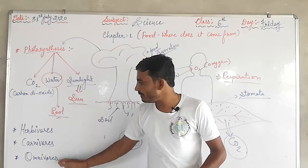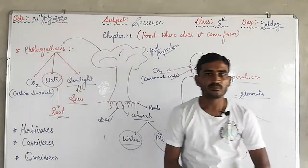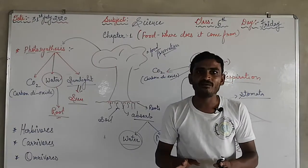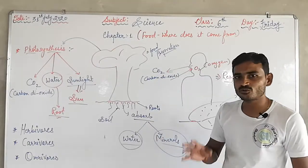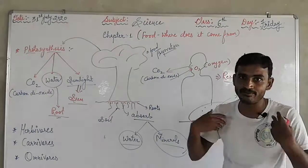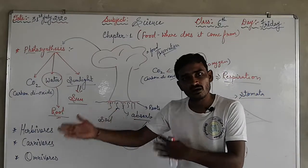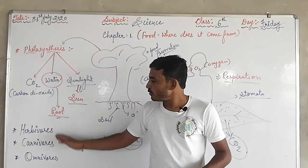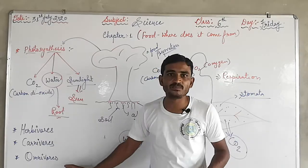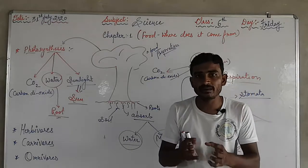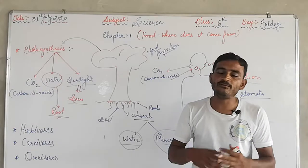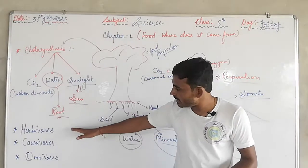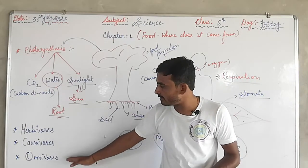Next, we will learn about different types of animals: herbivores, carnivores, and omnivores. Humans are also animals — we are social animals, and we have a brain, which is why we are different from other animals. This classification is on the basis of food-eating habits. Different animals have different eating habits, and based on that we have three categories.